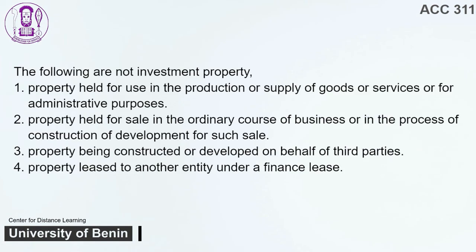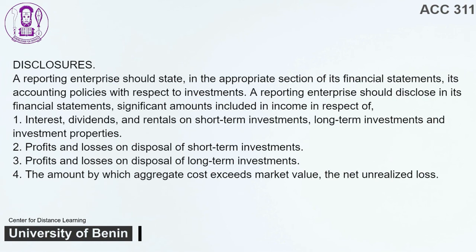The following are not investment property: 1. Property held for use in the production or supply of goods or services or for administrative purposes. 2. Property held for sale in the ordinary course of business or in the process of construction or development for such sale. 3. Property being constructed or developed on behalf of third parties. 4. Property leased to another entity under a finance lease. Disclosures. A reporting enterprise should state its accounting policies with respect to investments and disclose significant amounts included in income in respect of: 1. Interest, dividends, and rentals on short-term investments, long-term investments, and investment properties. 2. Profits and losses on disposal of short-term investments. 3. Profits and losses on disposal of long-term investments. 4. The amount by which aggregate cost exceeds market value — the net unrealized loss.